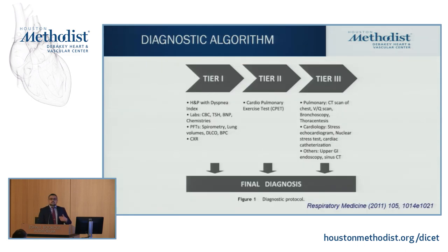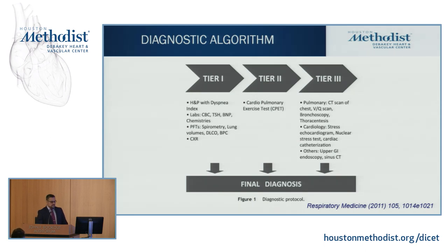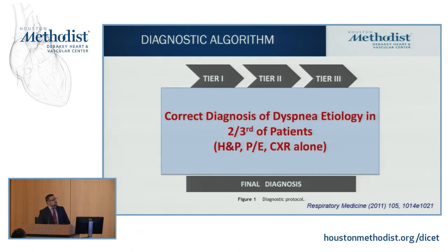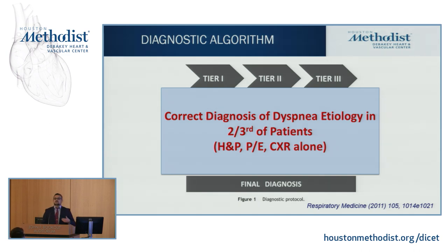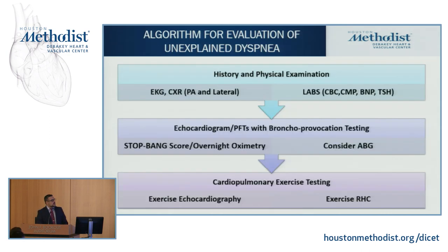There are various diagnostic algorithms in the literature for unexplained dyspnea. One published in Respiratory Medicine suggests a tiered sequence, starting with simple tests and moving toward more complex ones. That paper found you could reach the correct diagnosis in two-thirds of patients presenting to a dyspnea clinic using only a good history, physical examination, and chest x-ray. I've developed an algorithm you may find helpful for patients presenting with dyspnea, which I'll walk through to show how dyspnea becomes unexplained.